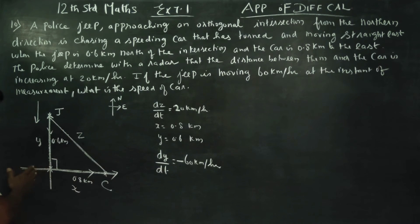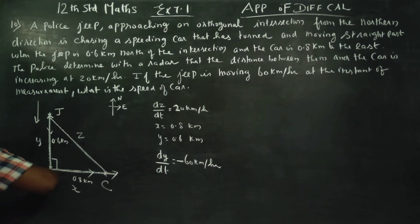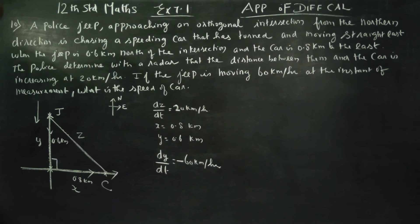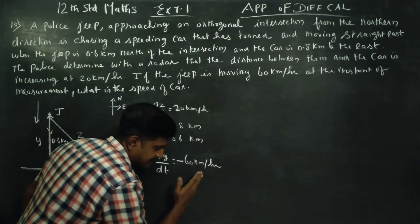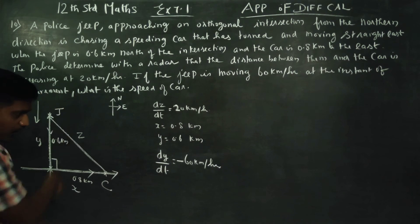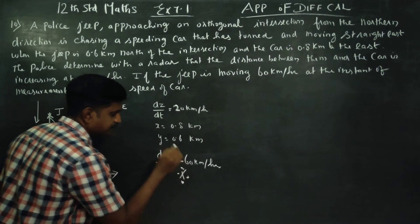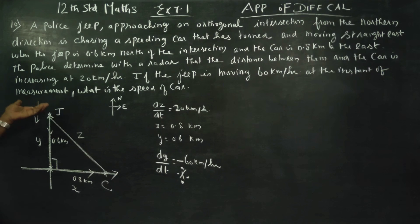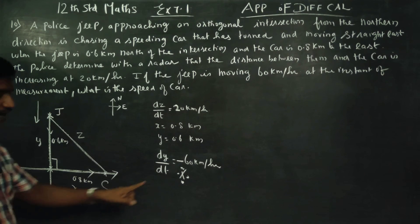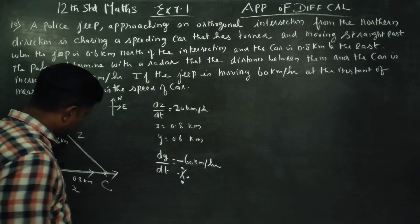Moving away is positive; moving towards is negative. The jeep is approaching the intersection, so dy/dt = -60. What is my question? At the instant of measurement, what is the speed of the car? That is, find dx/dt.